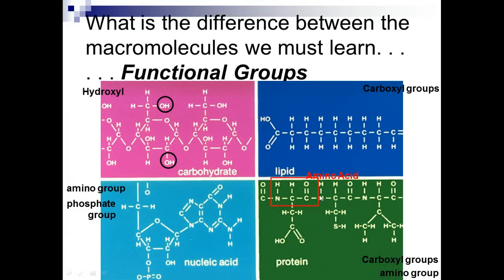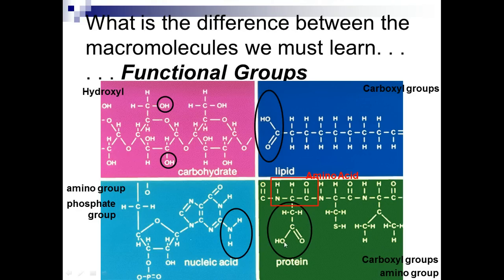Here are some functional groups you need to be able to identify. Hydroxyl groups (OH groups) offer some polarity, which makes them hydrophilic — they bond with water. We've got carboxyl groups, and we've got amino groups, which we see in the NCC backbone. Here's a carboxyl group, here's the R group, here's an amino group, and here's a phosphate group.